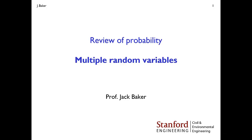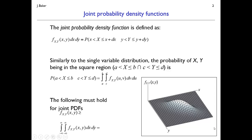In the last video we discussed random variables and some of the tools and conventions we can use for computing probabilities associated with random variables taking particular values. In this video we're going to discuss what we do when we have multiple random variables and we want to talk about probabilities of multiple random variables taking multiple ranges of values. I'm going to focus on continuous random variables, and what we're going to use is the joint probability density function.